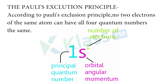We know what the quantum numbers are — that is N, L, Ml, and Ms. These four are the quantum numbers. So according to Pauli's exclusion principle, no two electrons of the same atom can have all four quantum numbers the same.